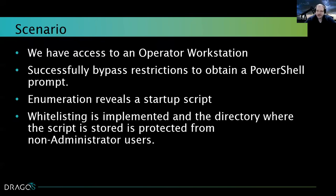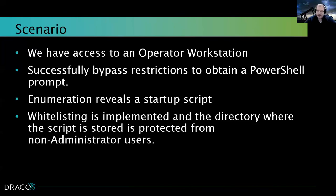We do have ways around a lot of this, but for the sake of time, let's just assume we bypassed all these restrictions and now we have attained a PowerShell prompt. At this point, we start enumerating the machine — we look at the host information, user information, and things like startup scripts. If the machine is domain joined, startup scripts, logon scripts, logon, logoff, startup, and shutdown scripts are commonly configured through Active Directory group policy objects, with the scripts being located on their domain controllers.